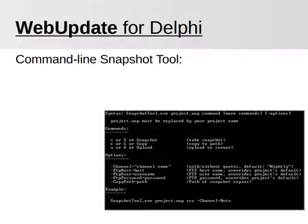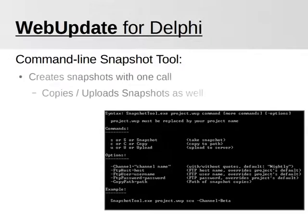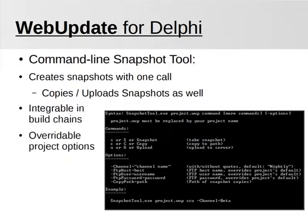Typically, you may want to automate snapshot creation, for example in a build script. This can be done easily by using the Command Line tool. Depending on the supplied commands and options, the snapshots can be created and uploaded by just a single call. In order to fit perfectly into build scripts, all project options, like UploadPath, can be overwritten.